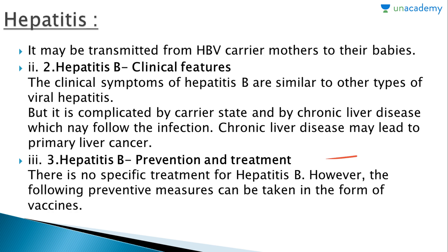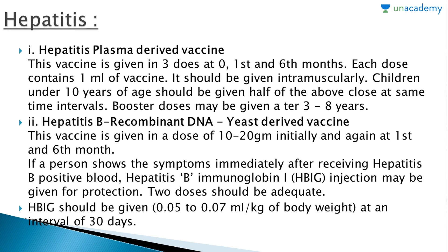There is no specific treatment for hepatitis B; however, preventive measures can be taken in the form of vaccines. The hepatitis plasma-derived vaccine is given in three doses at zero, first, and sixth months. Each dose contains one milliliter of vaccine given intramuscularly. Children under 10 years of age should be given half the above dose at the same time intervals.